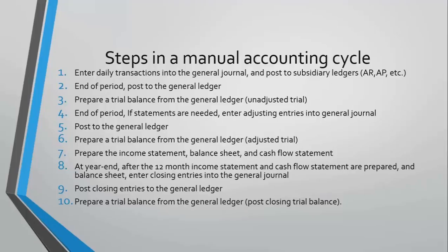We prepare our income statement, balance sheet, and cash flow on a regular basis. By the end of the year — step eight — we want a full 12-month income statement and the other statements with it. Once we finish the 12-month income statement, we're ready to look at closing entries. At that point, the temporary accounts — revenues, expenses, and the dividend account — we no longer need those balances. We don't want to leave them in place going into next year, which would give us 13 months of revenue or expense. So the closing entry process takes the data from revenues, expenses, and dividends and moves it into the retained earnings account.